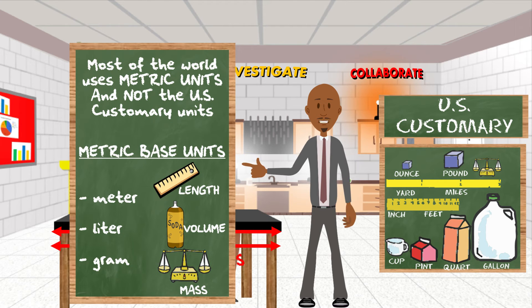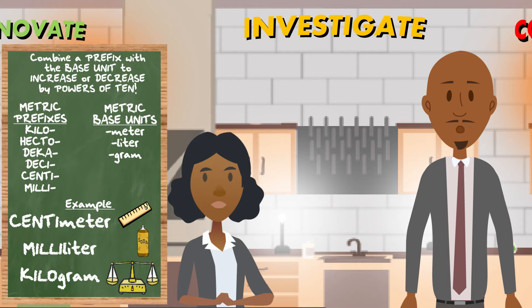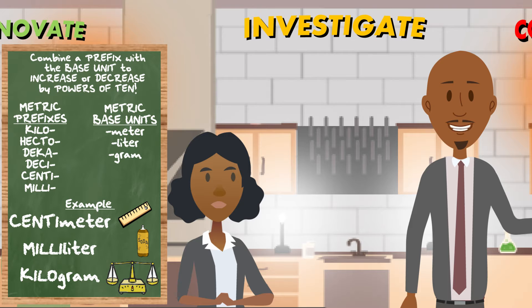Meters, liters, and grams — to measure length, volume, and mass. Metric units work by taking the base unit, like meters, liters, and grams, and you can just tack a prefix in front of them to make them larger by powers of 10.